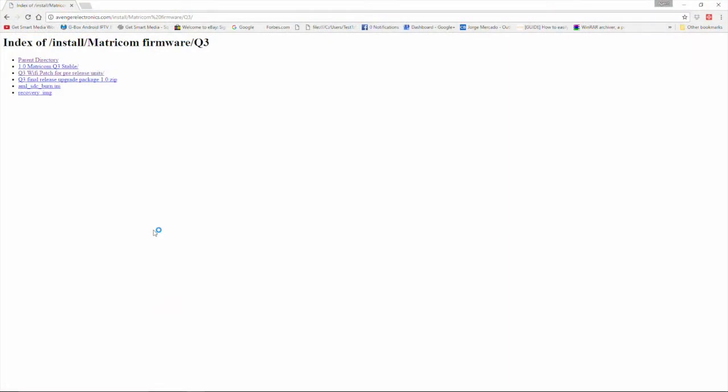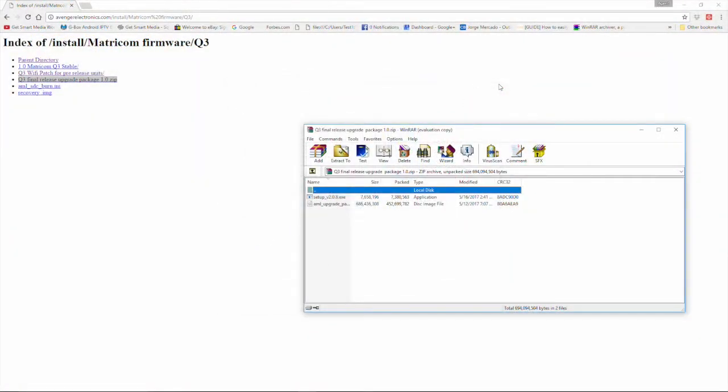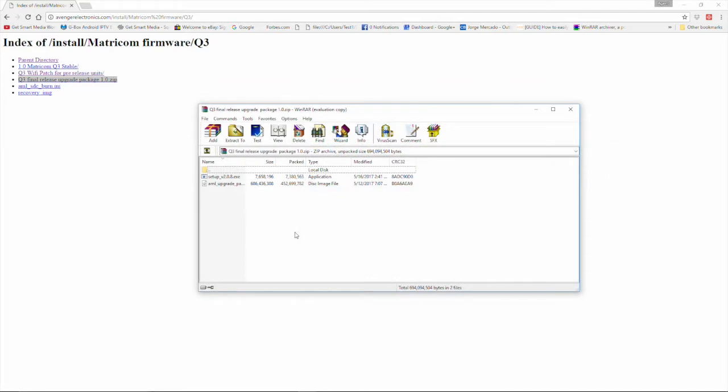All right, in the description of this video I'm providing a link here to this file. The file we're looking for is the zip folder I've named Q3 final release update package 1.0 zip. All right great, our file has just finished downloading. Let's go ahead and open it up and see what we got inside. So inside that folder we should have two files. One is going to be the setup.exe. That is going to be the USB burning tool that we're going to use to go ahead and load the AML update or upgrade package. So the first step is going to be to double-click the setup.